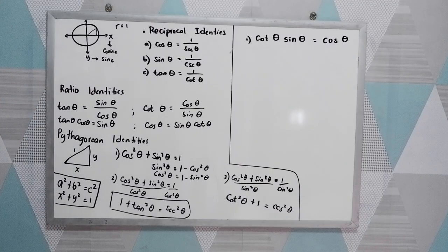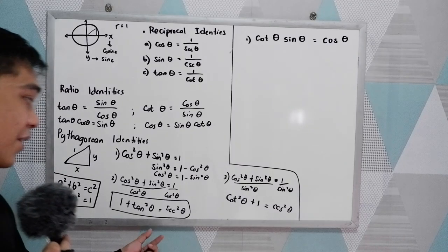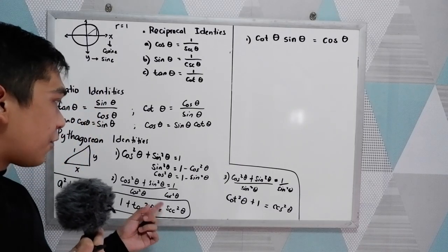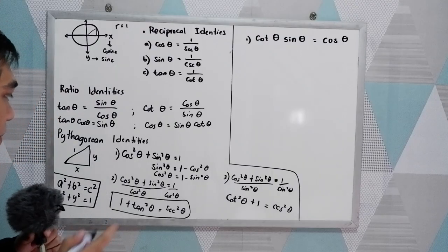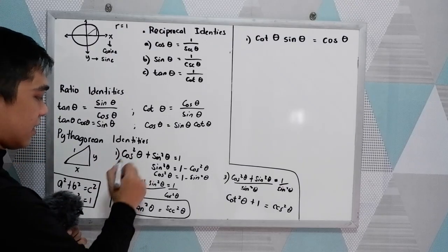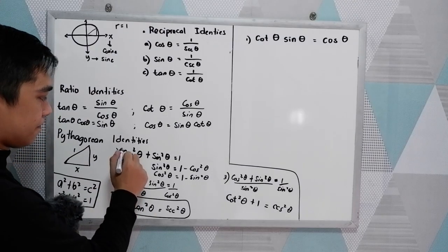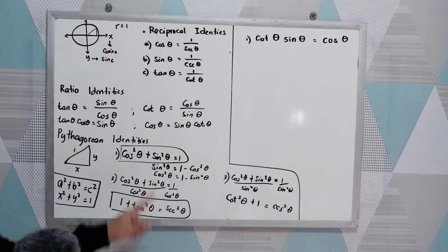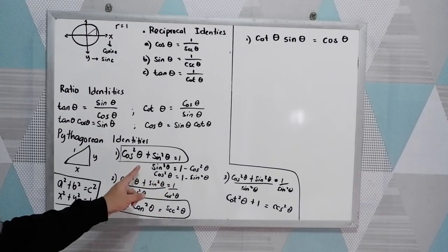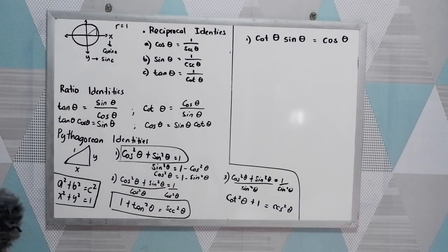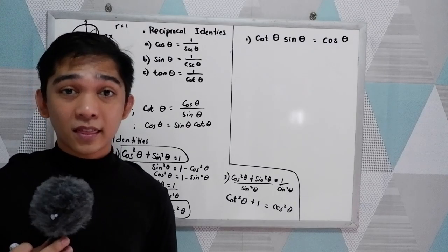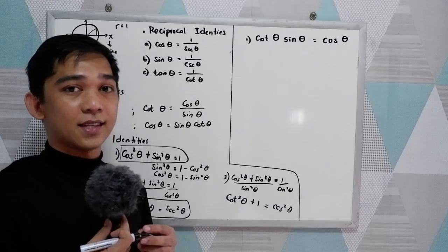Again, we can still derive different identities from our major identities. Now, how are we going to use our fundamental identities?